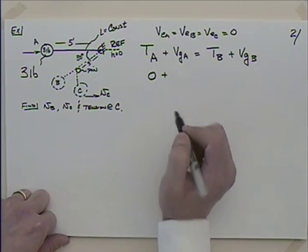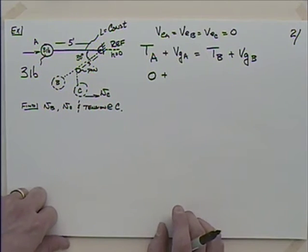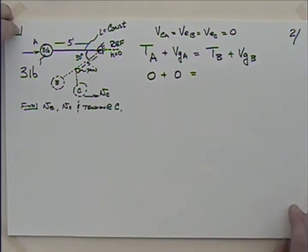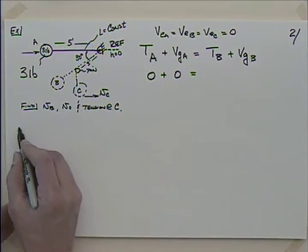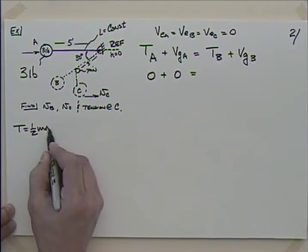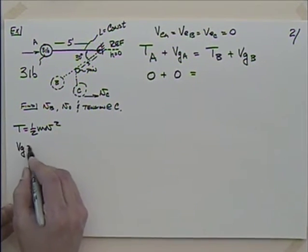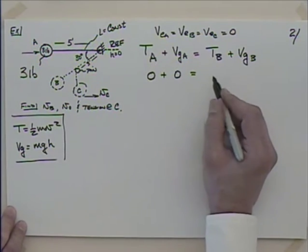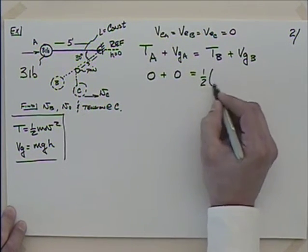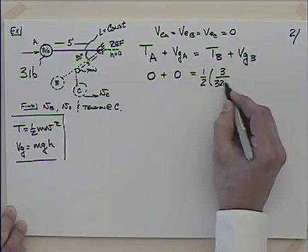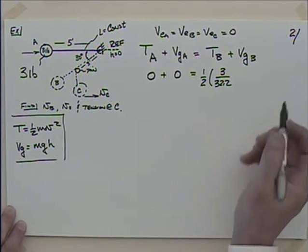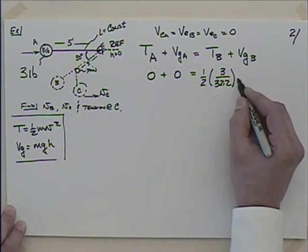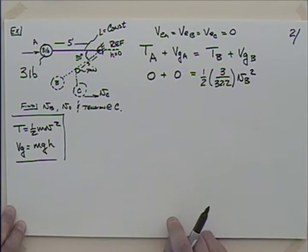At A, we're holding it at rest, so kinetic energy is zero. Since that's our reference, potential energy at A is also zero. The kinetic energy in general is one-half mv squared, and Vg is mgh. At B, I'll have one-half times 3 divided by 32.2 — converting pounds to mass — times the velocity at B squared. I'll work in feet.